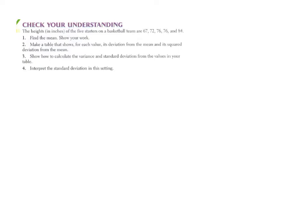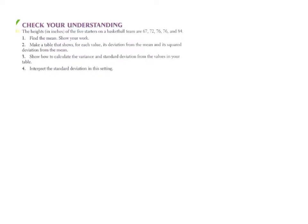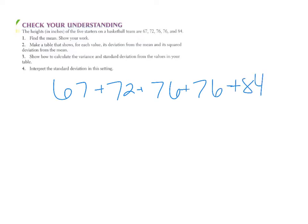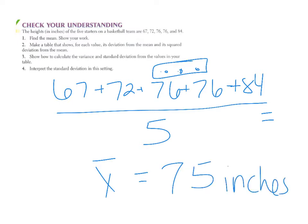Find the mean and show your work. If a free-response problem asks you to show your work, you will not get full credit if you don't. So lay it all out: 67 plus 72 plus 76 plus 76 plus 84, divided by 5. That gives us a mean of 75 inches — don't forget the units.